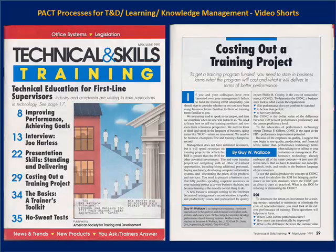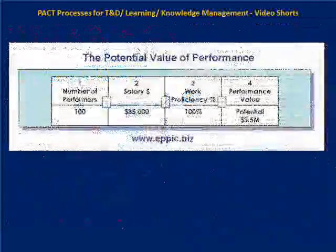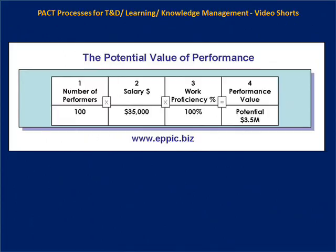So I latched on to this idea of using performance — performer uptime. We did this little math exercise in a room full of my project steering team members. We ballparked the number of performers at 100. We identified what their salary dollars were at $35,000. We said if you got 100% proficiency out of these 100 performers, this is what you're paying for that — you're paying $3.5 million a year for these people to be on the payroll and to perform.